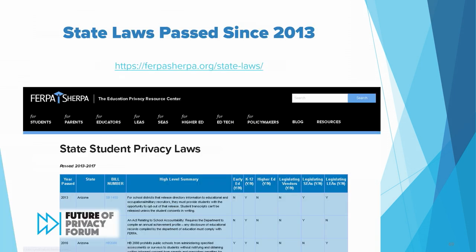If you need a list of the laws that have passed since 2013, we have one available on our website that we update on an ongoing basis. We'll soon be launching a page that also lists the statute numbers of laws prior to 2013, which a few states did have.